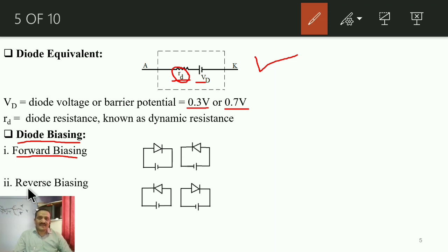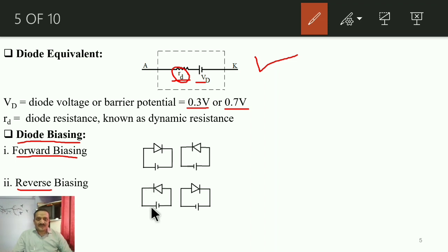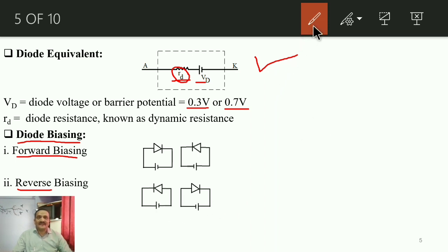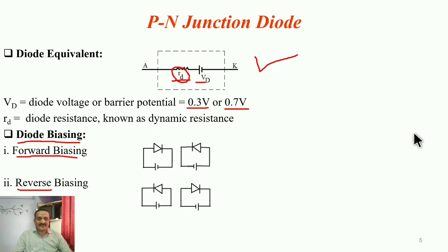Reverse biasing is just the opposite of forward biasing. Here, the N-type (cathode) is connected to the positive potential and the P-type (anode) is connected to the negative potential of the DC source. Such a connection is known as reverse biasing.